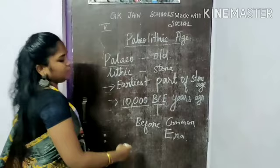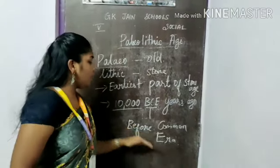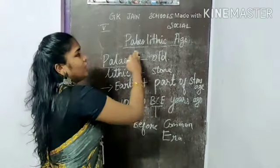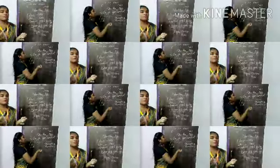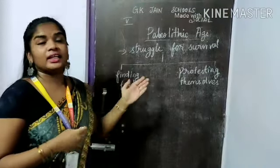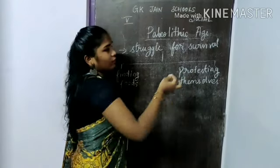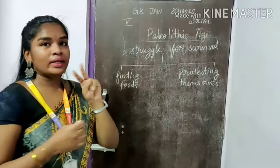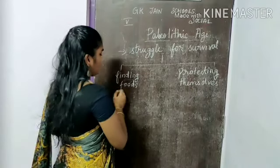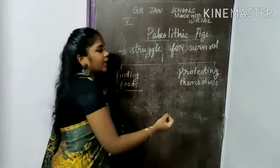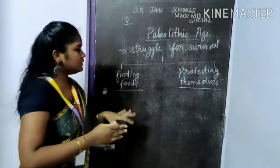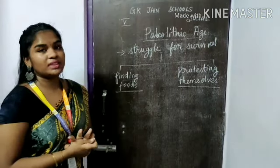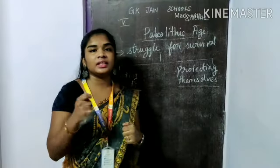The word BCE means Before Common Era. Paleolithic age people struggled a lot for their survival — to live on the earth they struggled a lot. They had only two concerns: one is finding food and another one is protecting themselves. These were the two concerns for our early humans who lived 10,000 BCE years ago.